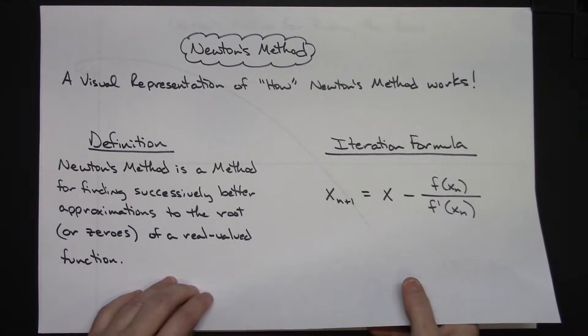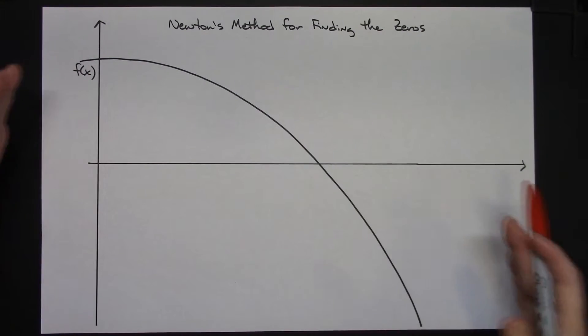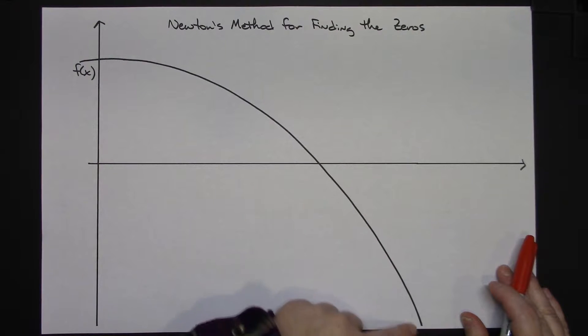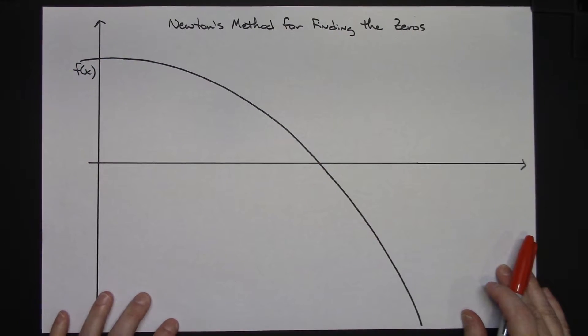But I want to take a look at how this is actually being done visually. So in this example, let's say that we've got a random function that looks like this and I'm wanting better and better approximations for that zero.